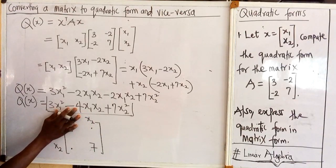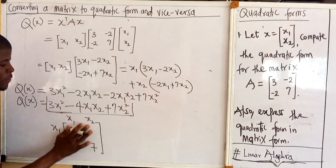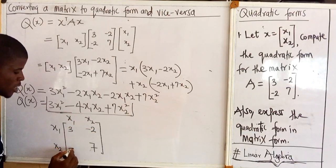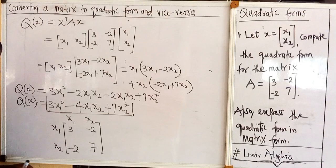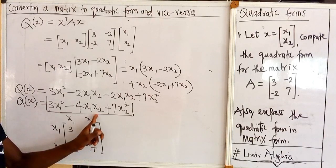We will share this minus 4 to equal parts to have minus 2 and minus 2. So this is the matrix of this quadratic form.